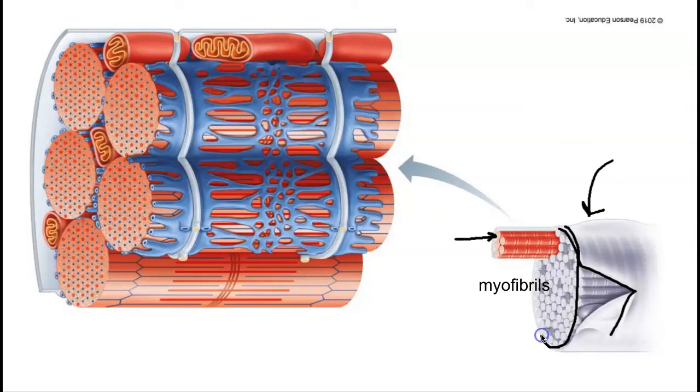What we can't see from this picture is that each myofibril is surrounded by an organelle called the sarcoplasmic reticulum. That's what they're showing us over here. In this picture, each one of these orange cylinders is a myofibril, and notice how there's this blue sleeve that surrounds it. That's the sarcoplasmic reticulum.